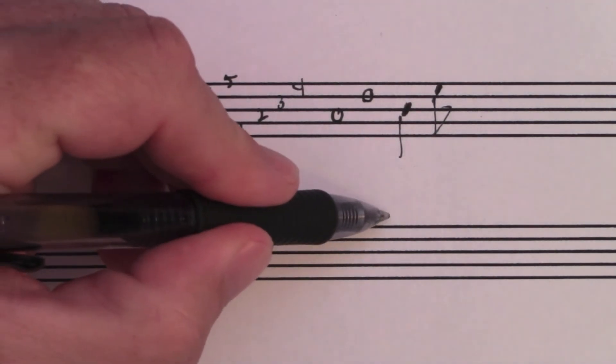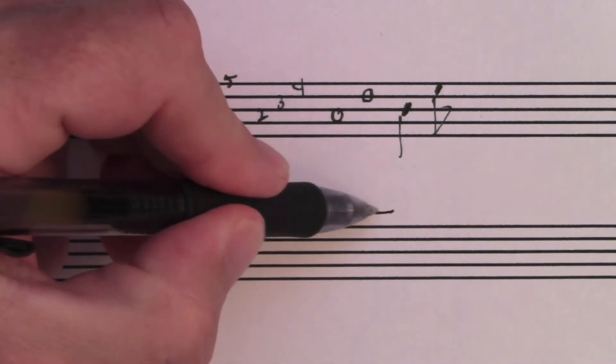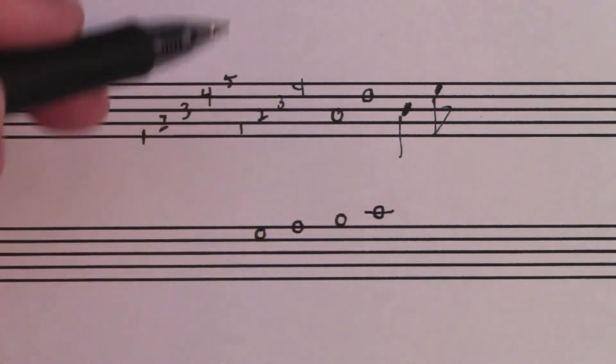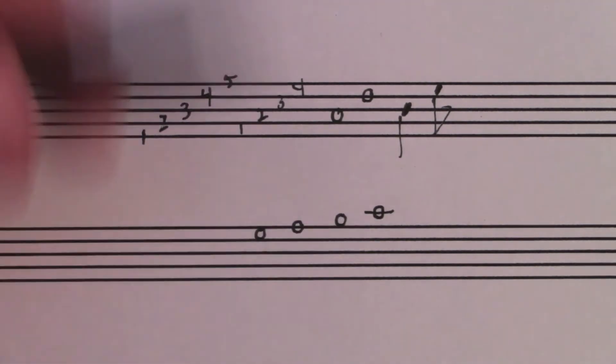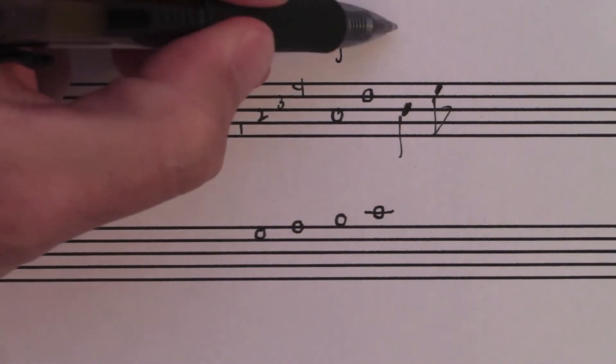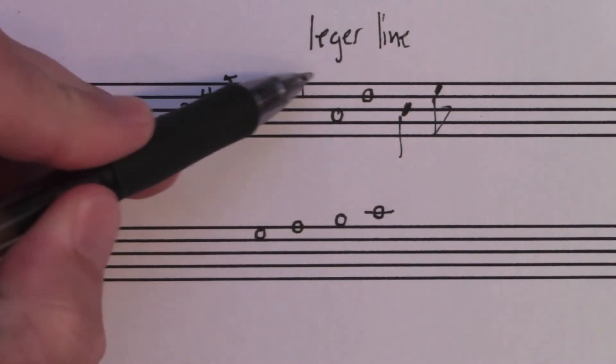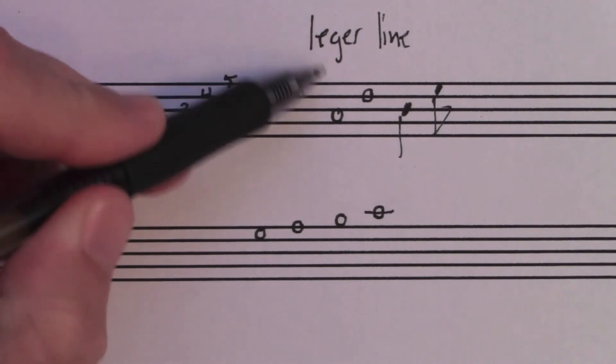Then we have a line note. But we're out of lines, so we just add a line just for this note. That line is called a ledger line. You can also spell this with a D, but this way is better.